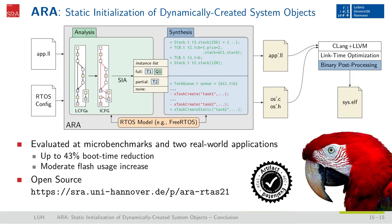To conclude my talk, I presented our work on ARA, static initialization of dynamically created system objects. ARA is a whole system analyzer and optimizer which reads the application source code, performs the static instance analysis to extract the instance list, generates operating system objects for those instances, and specializes the system calls for the application's needs. ARA is able to reduce the boot time of embedded real-time systems by up to 43% for real-world applications and can be integrated into the compiler toolchain as it works fully automatically. The source code and benchmarks are available on our website. There you also find the artifacts we supplied for ARA's artifact evaluation, which we successfully passed. Thank you very much for your attention and I hope you enjoyed this presentation.